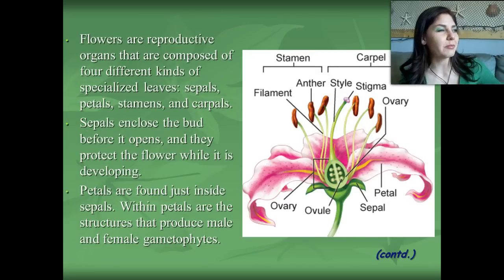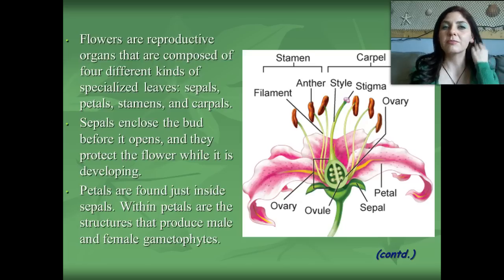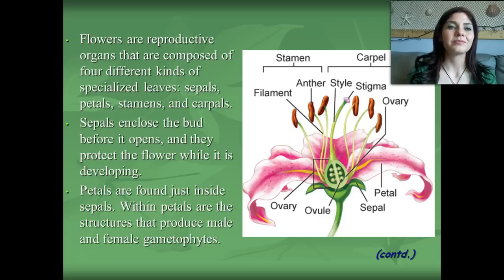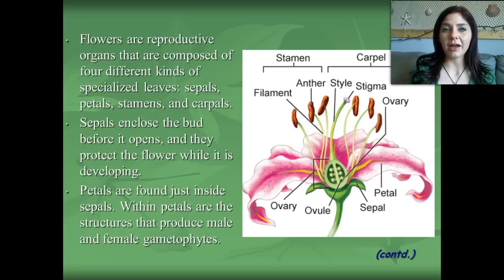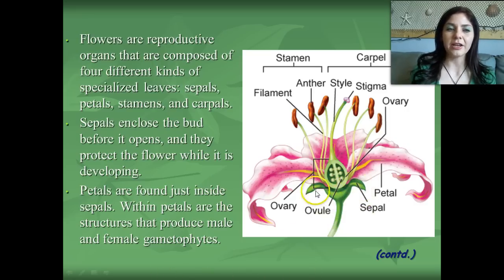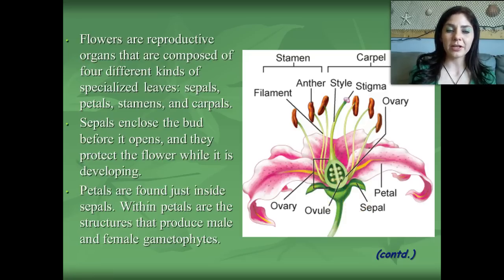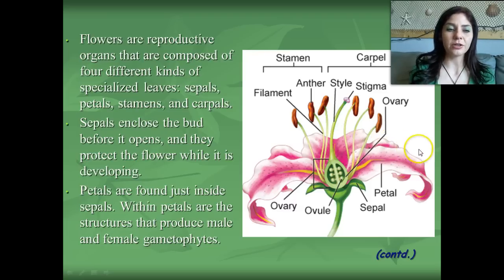Flowers are the reproductive organs of plants, composed of four different kinds of specialized leaves: sepals, petals, stamens, and the carpel. The sepals enclose the bud before it opens and protect the flower while it's developing. The petals are found just inside the sepals, and within the petals are the structures that produce the male and female gametophytes.